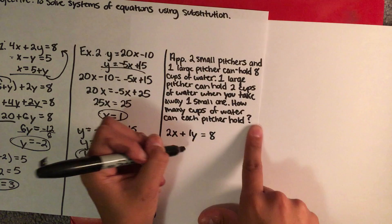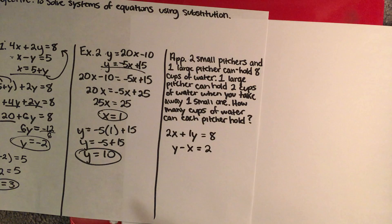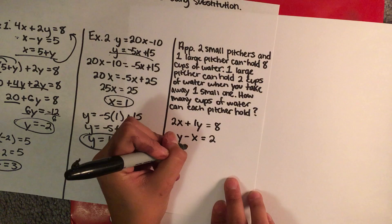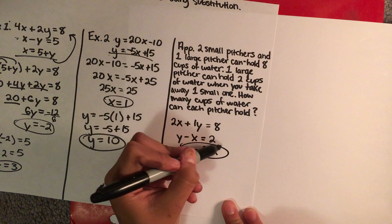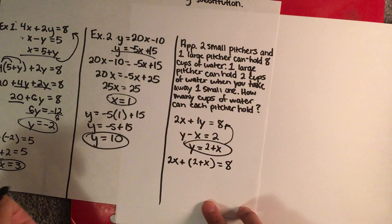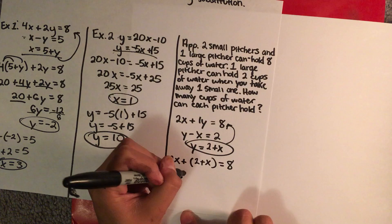So, letting x be the small pitcher and y be the large pitcher: 2x plus y is equal to 8, and y minus x is equal to 2. You add x over, so y is equal to 2 plus x. You plug this into your first equation, and you have 2x plus (2 plus x) is equal to 8.